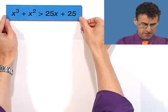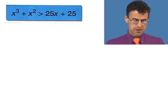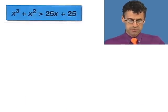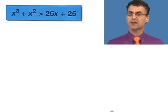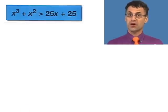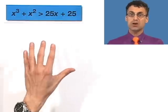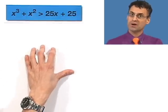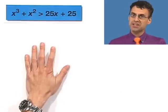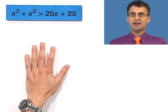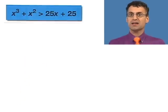Here's a cubic inequality to consider: x cubed plus x squared is greater than 25x plus 25. We want to solve this inequality — find all values of x that make it true. Just like with a polynomial equation, the same procedure applies: get everything to one side, bring it all over, and have the expression greater than zero on the other side.